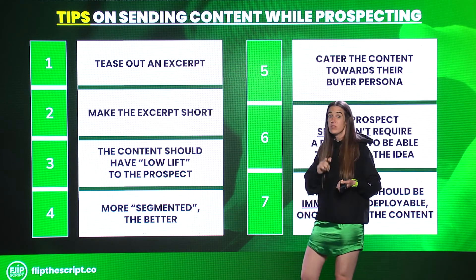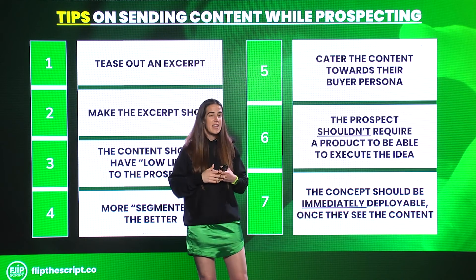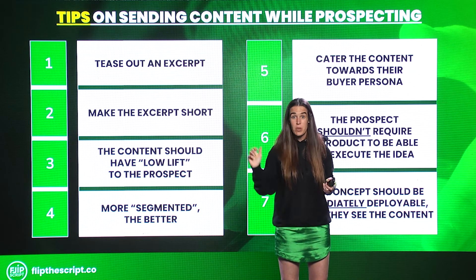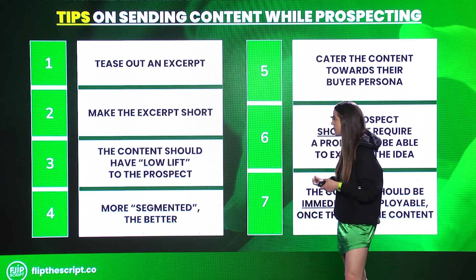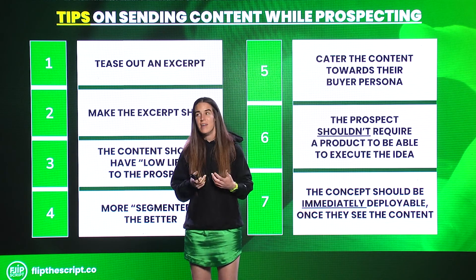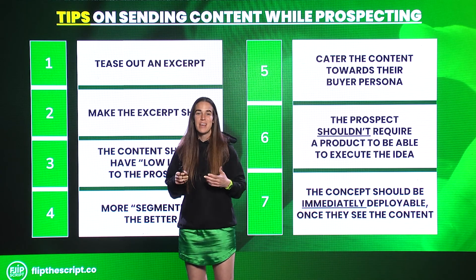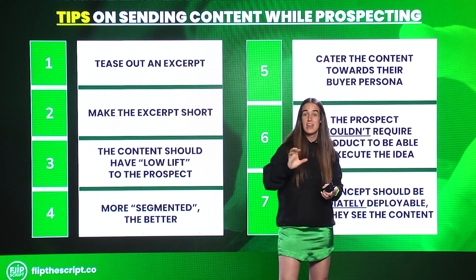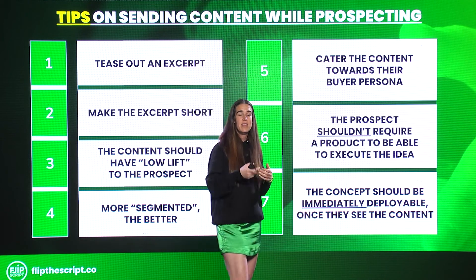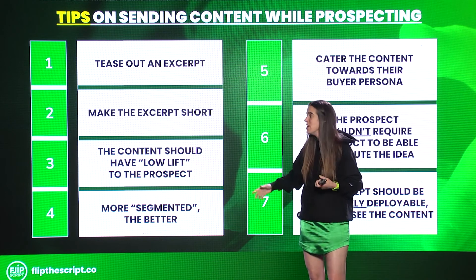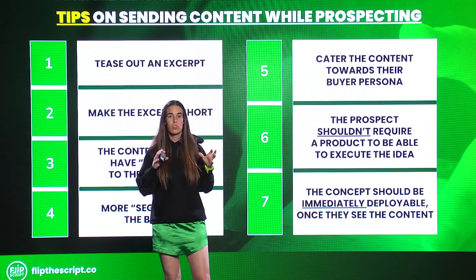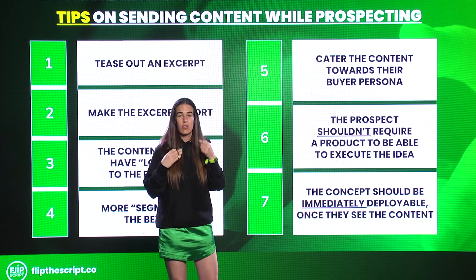Number three: the content should have low lift for the prospect. Send something that doesn't have a lot of gates or require them to put in their email multiple times. Sometimes content will be great but blocked by paid ads. Try to make sure there's low lift for your prospect to enjoy it. Number four: more segmented, the better. Even though I love articles with lengthy debate, versus 'Top Five Foods to Avoid to Lose 20 Pounds in the Next Month' — I'm going to err towards the latter. The top 20, the top seven — the more segmented and clickbaity-ish, the more attractive to the reader. Optimize for articles that add value and have been segmented in a digestible fashion.